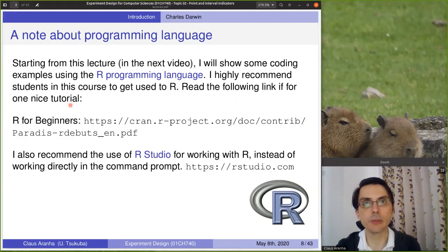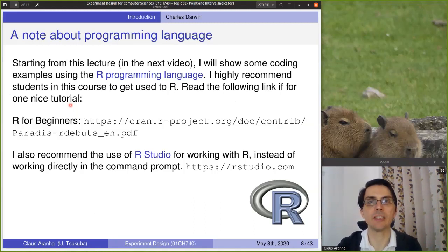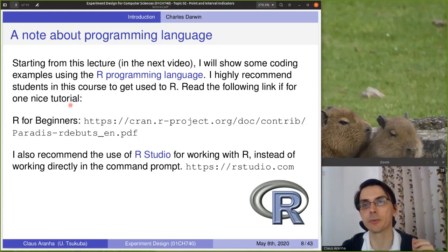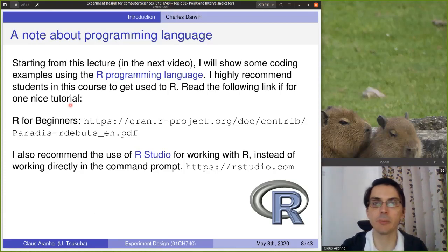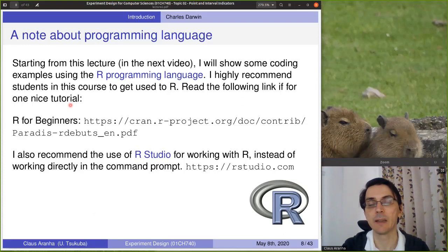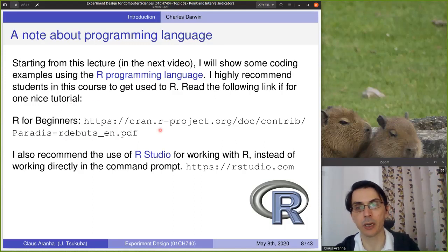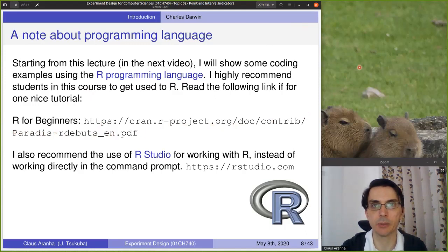A quick note before we start the lecture: starting from this lecture, we are going to give many examples in code about how to calculate the concepts we're going to talk about. In the next video, I will show some coding examples. All these coding examples use the R programming language. R is not something normally learned in computer science courses, but it's not a very difficult language to learn. It's a language that is very specific to statistical analysis — it has a very large number of libraries for different statistical tests, different ways to present data, and different ways to pre-process and process data. I highly recommend that students taking this course get acquainted with R. There's a link for 'R for Beginners' that describes the main characteristics of R, and there is also RStudio software that can help you get started.